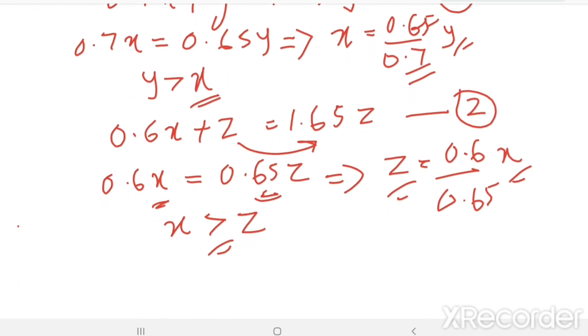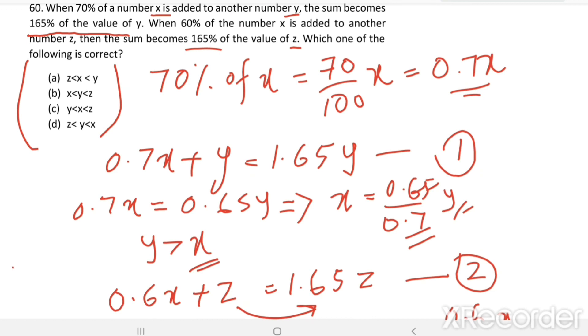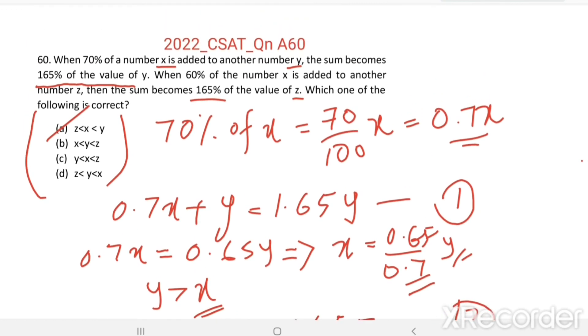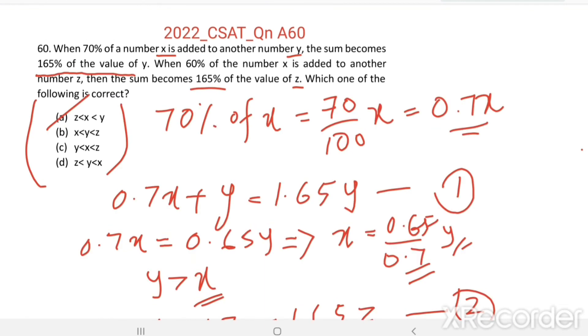So combining these two, we get x is greater than z and y is greater than x. So y greater than x greater than z, or z less than x less than y. Z less than x less than y. Option A is the right answer. Thank you.